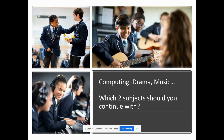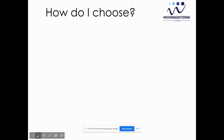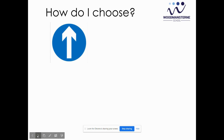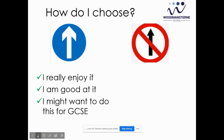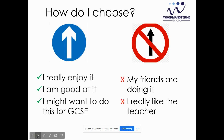So how do you choose which two subjects out of these three to continue with? Some really good reasons to choose a subject are because you really enjoy it, you're good at it, or because it's something you might want to do for GCSE. Some not great reasons are because your friends are doing it or because you really like the teacher — you may not be in the same group as your friends and you may have a different teacher. Your subjects will be with you for the rest of your lives, so choose because you enjoy it, you're good at it, or you might want to do it for GCSE.